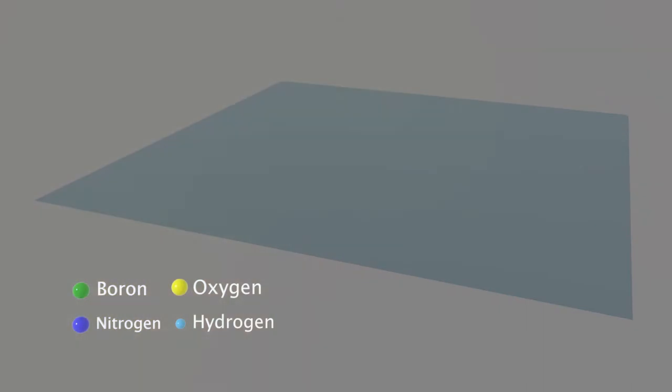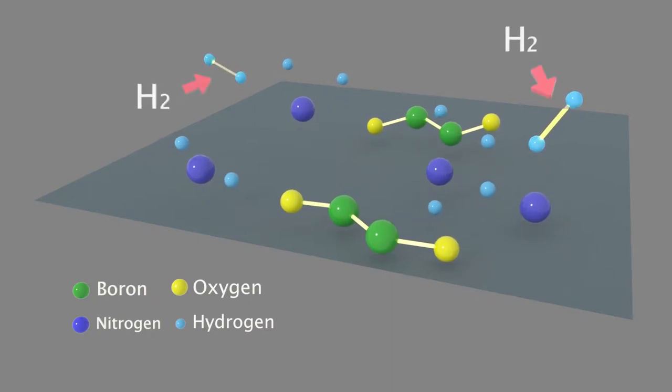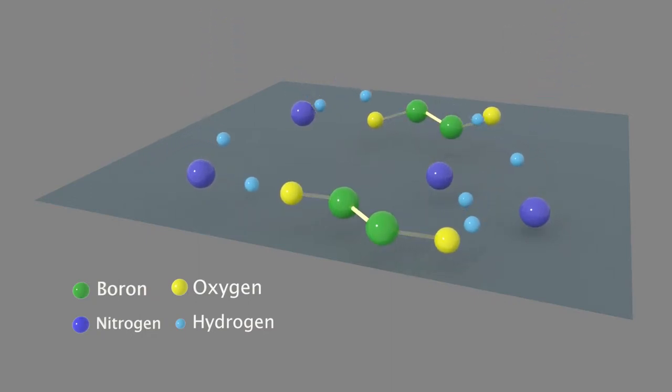Here, the vapor reacts with the ammonia gas by breaking the nitrogen hydrogen bonds in ammonia and boron oxygen bonds in boric acid.